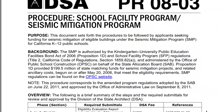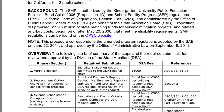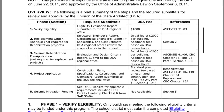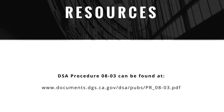An excellent resource for understanding the DSA process is their Procedure 0803. Within this document you'll be able to find the most updated seismic mitigation program contact information for the DSA. This document can be found at www.documents.dgs.ca.gov/DSA/PUBS/PR_08-03.pdf.